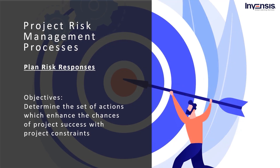In the next process, we have to plan risk responses. This determines effective response actions that are appropriate to the priority of the individual risks and the overall project risk. It takes into consideration the stakeholders' risk attitudes and the conventions specified in the risk management plan, along with any constraints and assumptions that were determined when the risks were identified and analyzed. Let us talk about the objectives of the plan risk responses process.